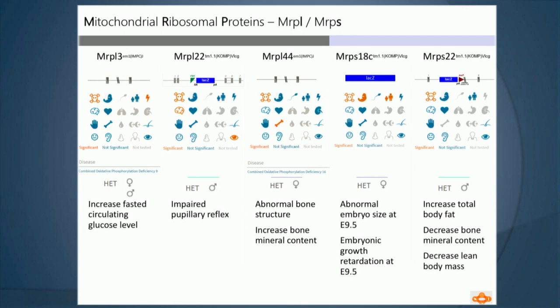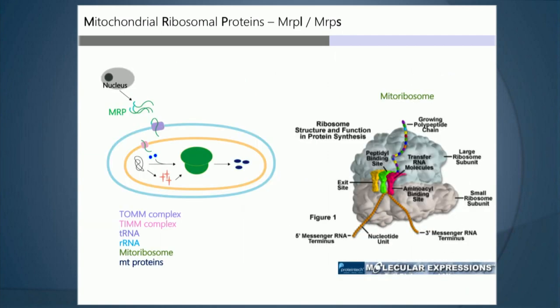I'm going to show you data on five lines: MRPL3, MRPL22, MRPL44, MRPS18C, and MRPS22. Some are LacZ-containing and some are endonuclease-mediated. Interestingly, pretty much all of them have heterozygous phenotypes that came out of your groups, and they also pretty much all have human disease associations, which adds relevance. As a reminder, these are all nuclear-encoded genes that are transcribed, translated, and then imported into the mitochondria where they function as part of the mitoribosome, responsible for translation of the mitochondrial-encoded genome. There are two subunits — the large and small, hence MRPL and MRPS — about 70 total genes.